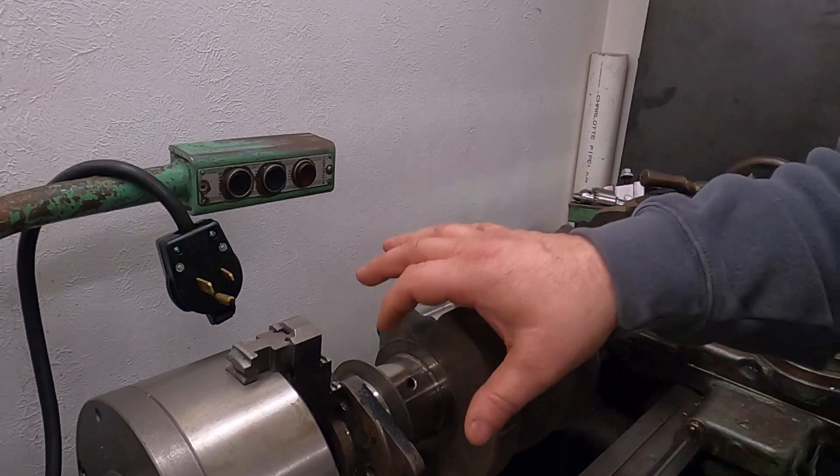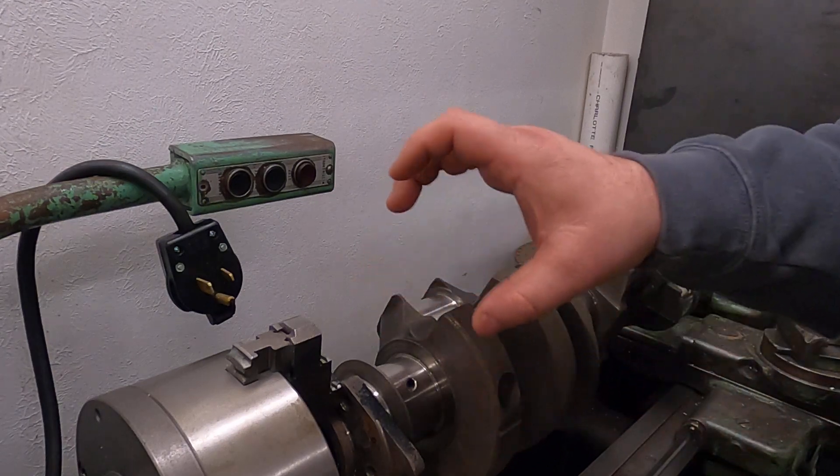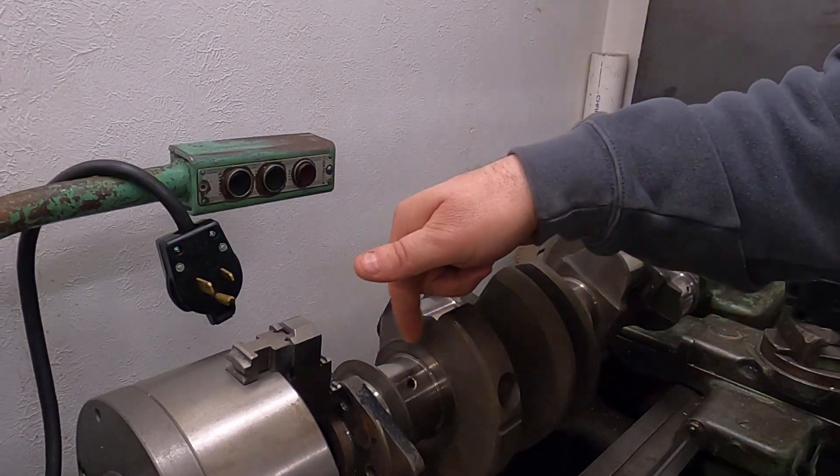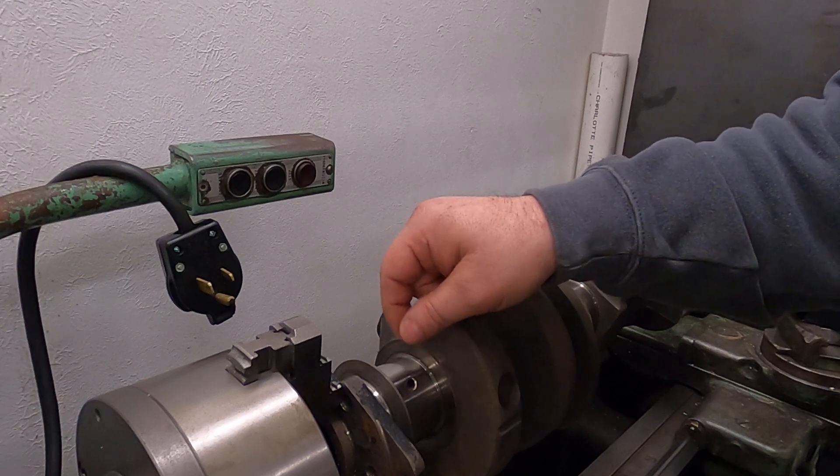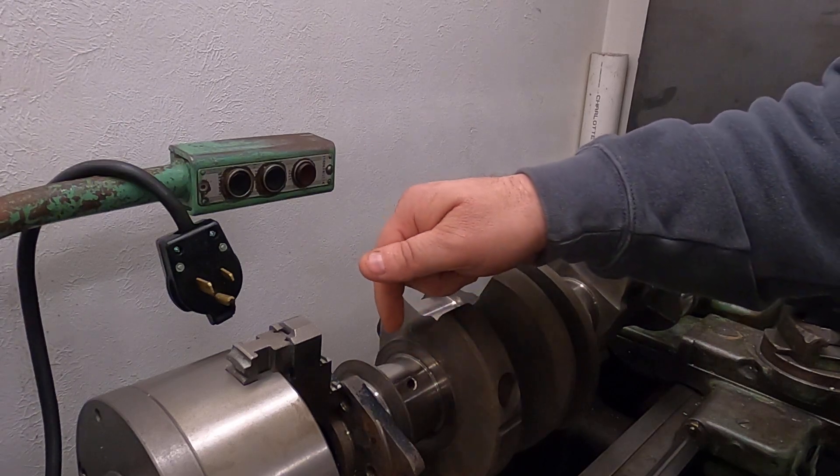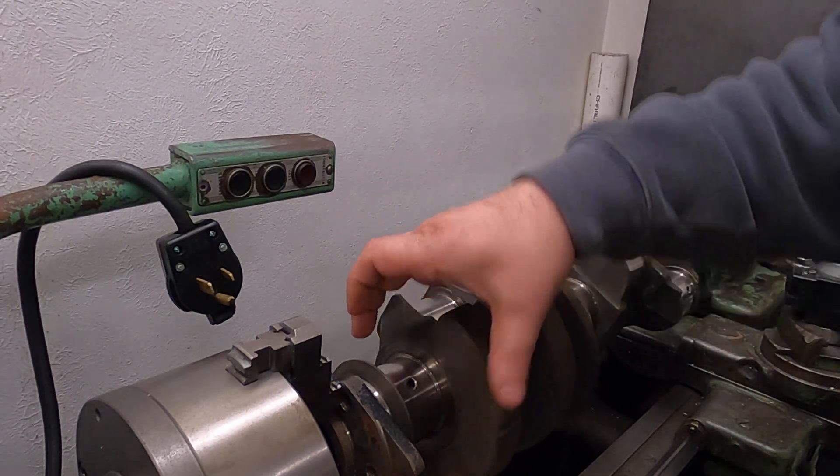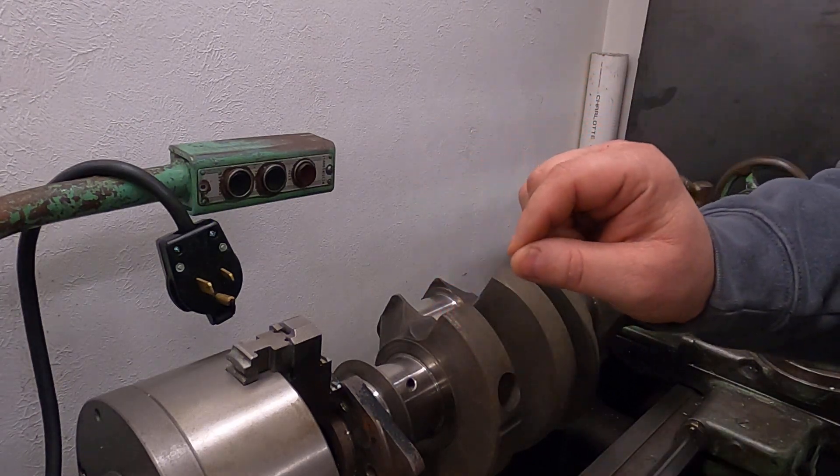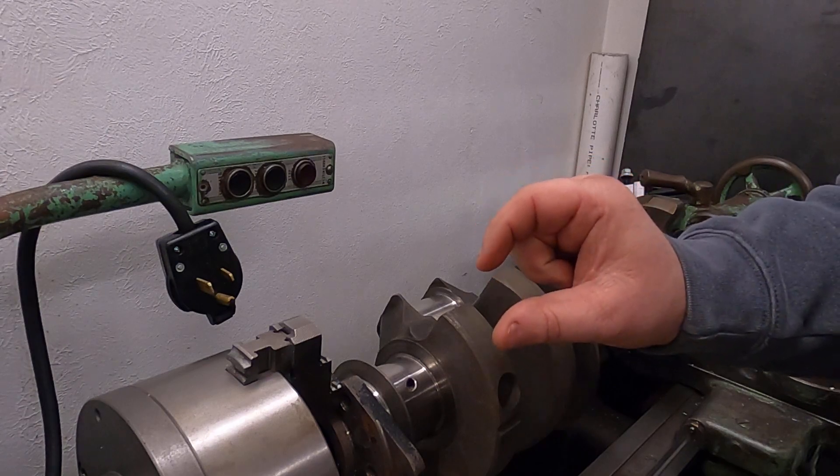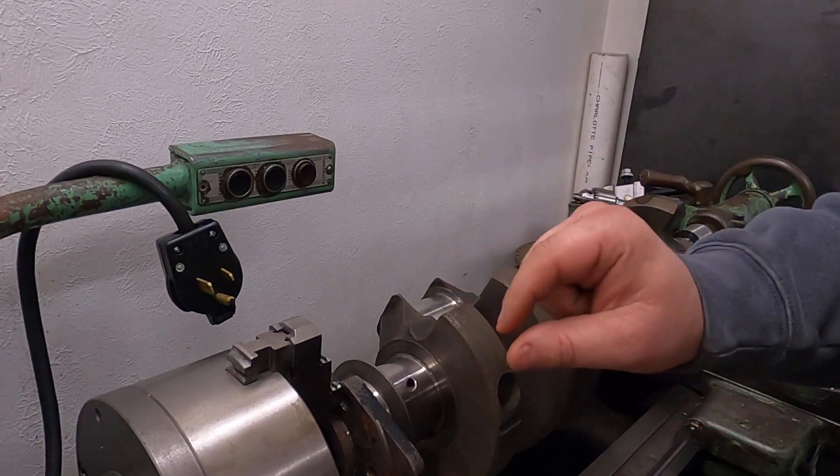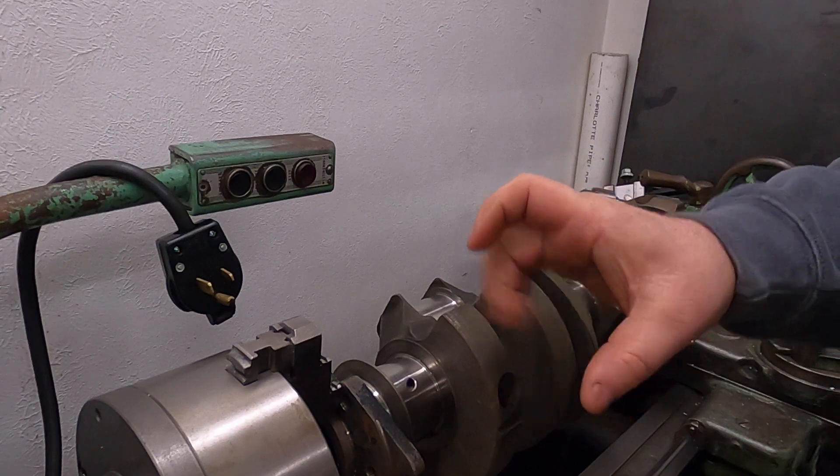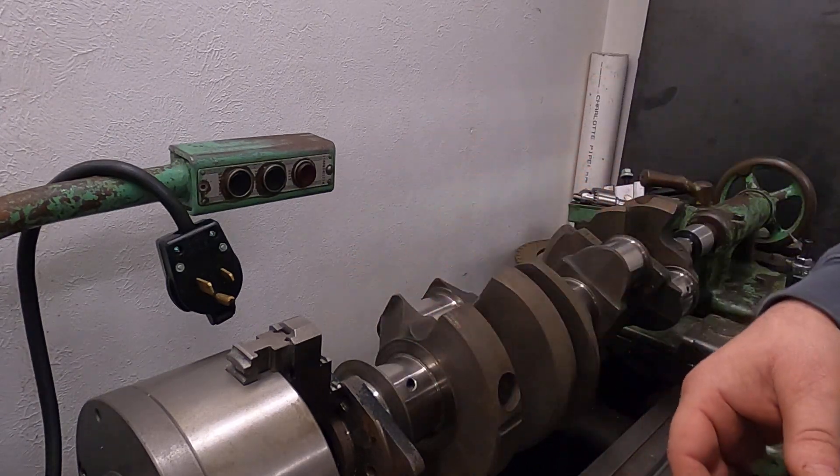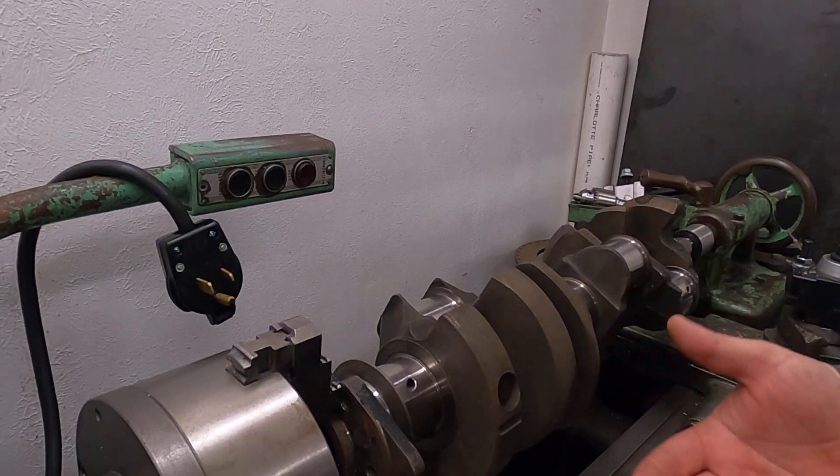It can be within a thou or so. Some people use what's called plastigage. They put the crank in the block, put a strip of small plastic thread down, and torque the main cap down. Take the main cap back off, and however tight it smooshed that plastic thread out, you can kind of measure that thickness. The fatter it is, obviously the tighter that oil clearance would be. You can check it that way.